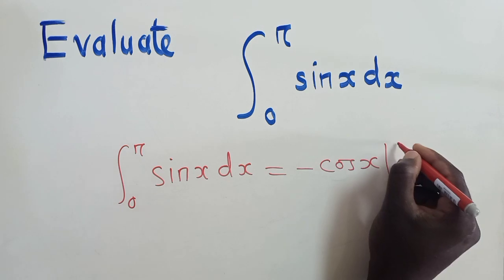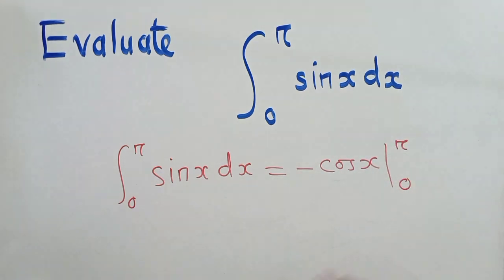And you put the limits, the upper limit is pi and lower limit is 0. So at this point, you just substitute negative outside there.